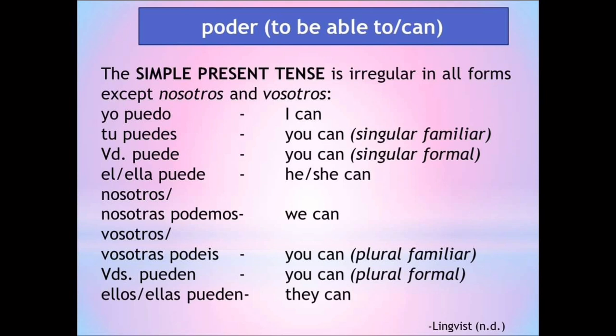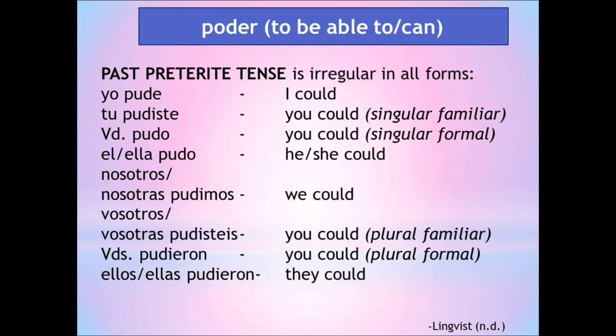Now let's take poder, which means 'to be able to' or 'can.' The simple present tense is irregular in all forms except nosotros and vosotros: yo puedo (I can), tú puedes (singular familiar), usted puede (singular formal), él/ella puede, nosotros/nosotras podemos, vosotros/vosotras podéis (plural familiar), ustedes pueden (plural formal), ellos/ellas pueden (they can). Note that the past preterite tense is irregular in all forms: yo pude, tú pudiste (singular familiar), usted pudo (singular formal), él/ella pudo, nosotros/nosotras pudimos, vosotros/vosotras pudisteis (plural familiar), ustedes pudieron (plural formal), ellos/ellas pudieron (they could).